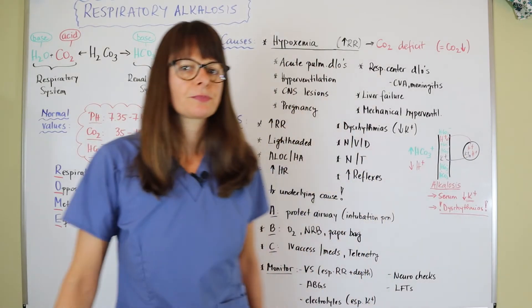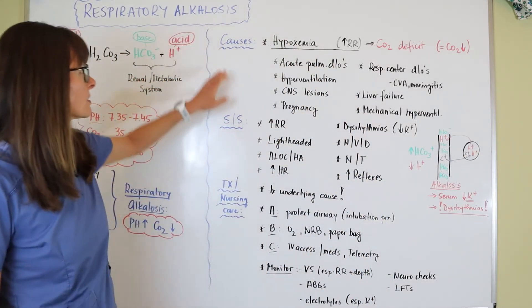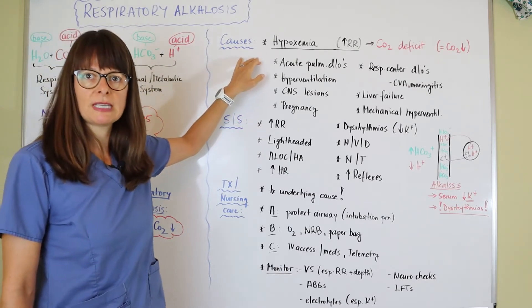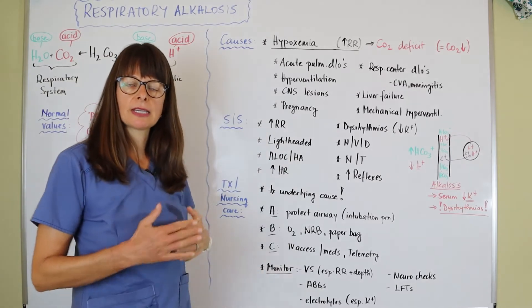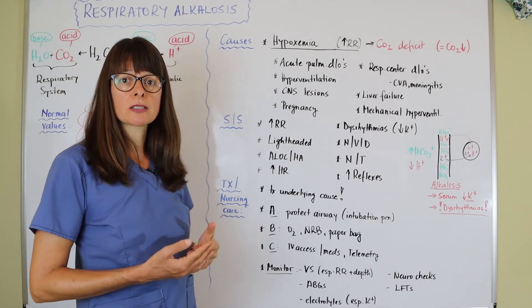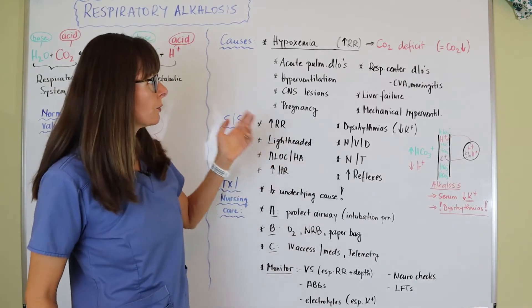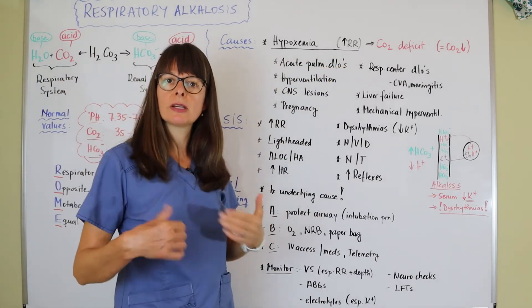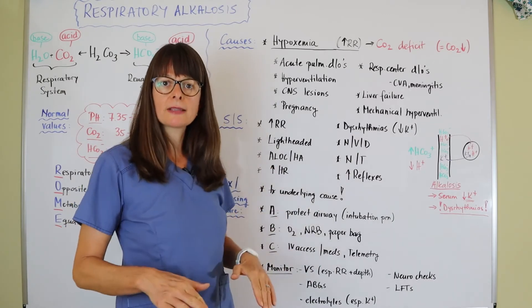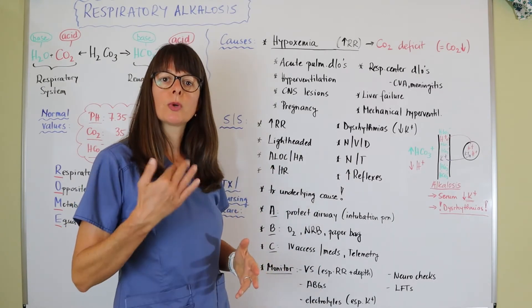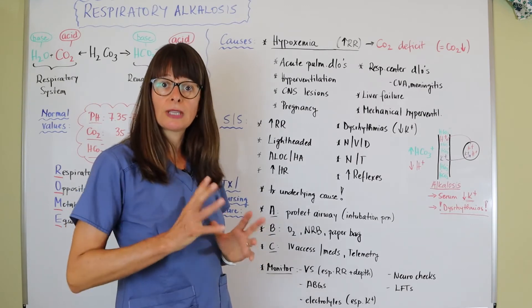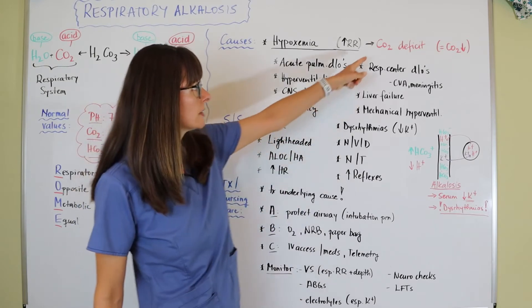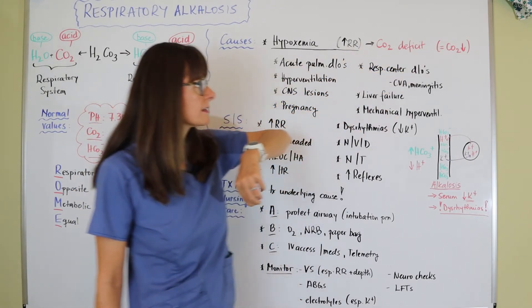Causes for respiratory alkalosis: anything that can cause hypoxemia. Think about this—if the body is starved for oxygen, it's going to increase the respiratory rate. When we increase the respiratory rate, we breathe in more oxygen but at the same time we exhale more CO2, which leaves the body, which leaves us in an alkalotic state. It leads to a CO2 deficit.